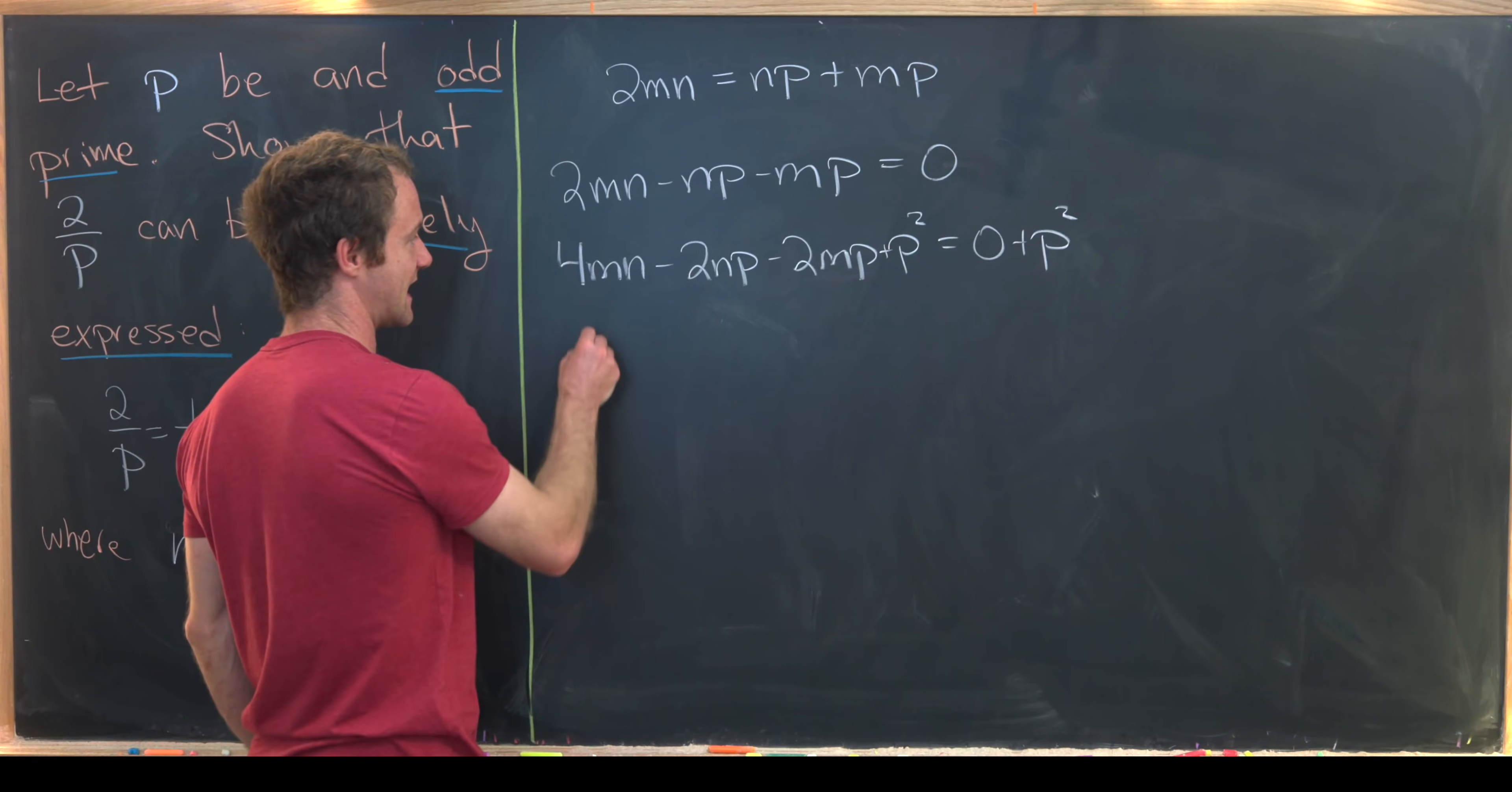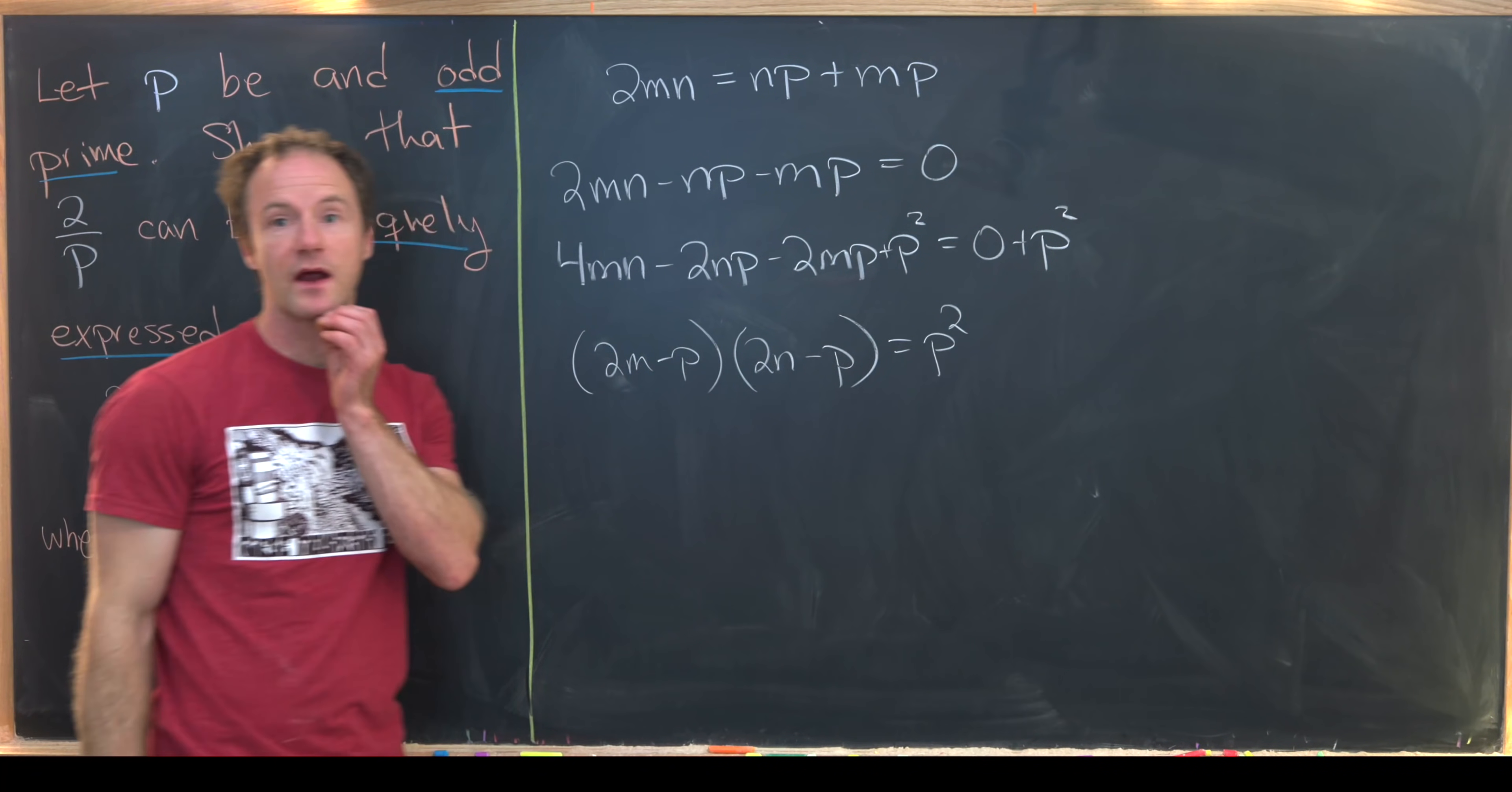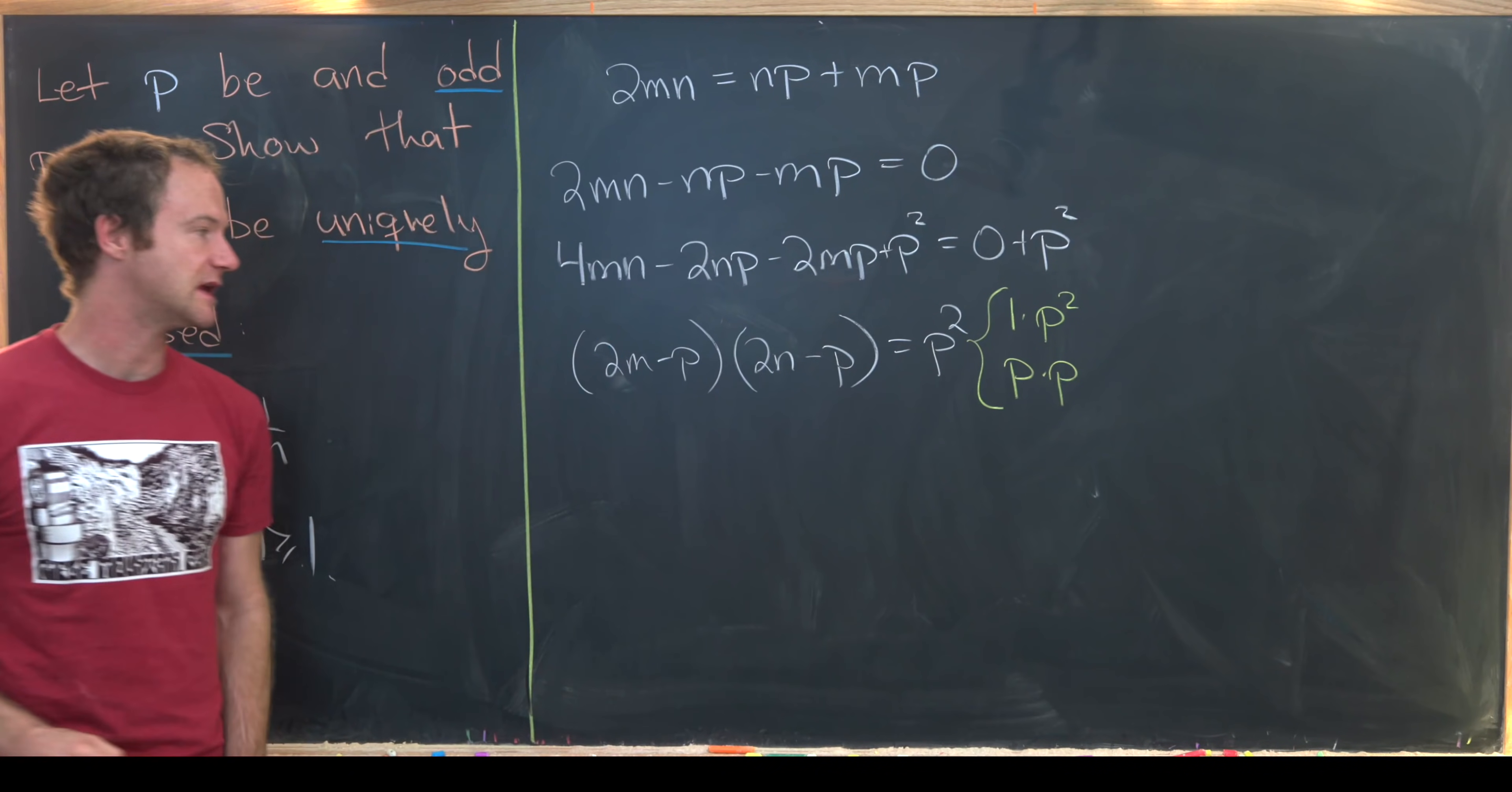So notice this left hand side now factors as (2M - P) times (2N - P). And this has got to be equal to P squared. But let's notice that since P is prime, P squared only factors two ways. It factors as 1 times P squared or P times P. Again that's because P is prime.